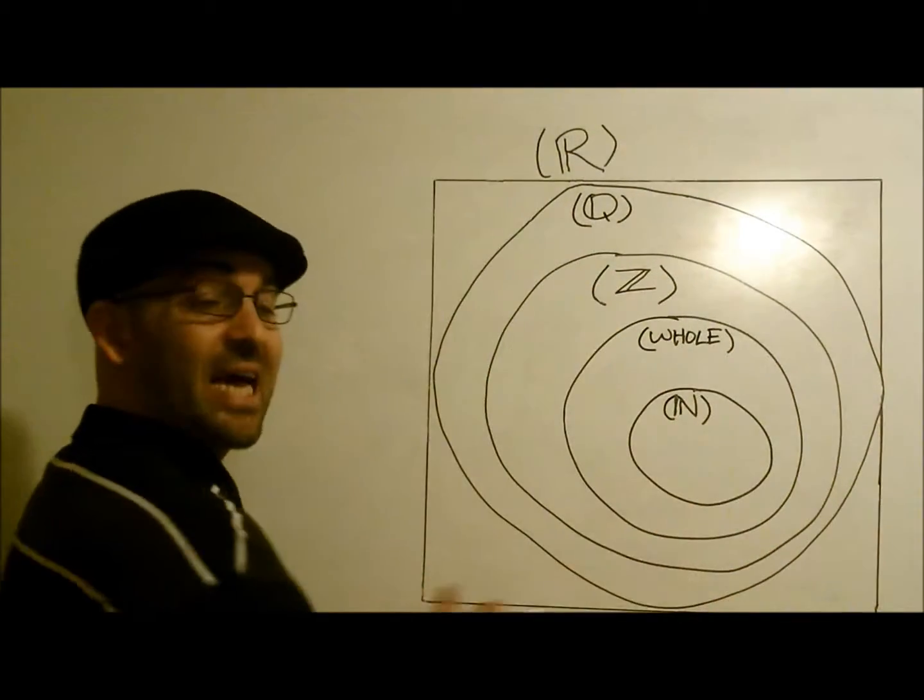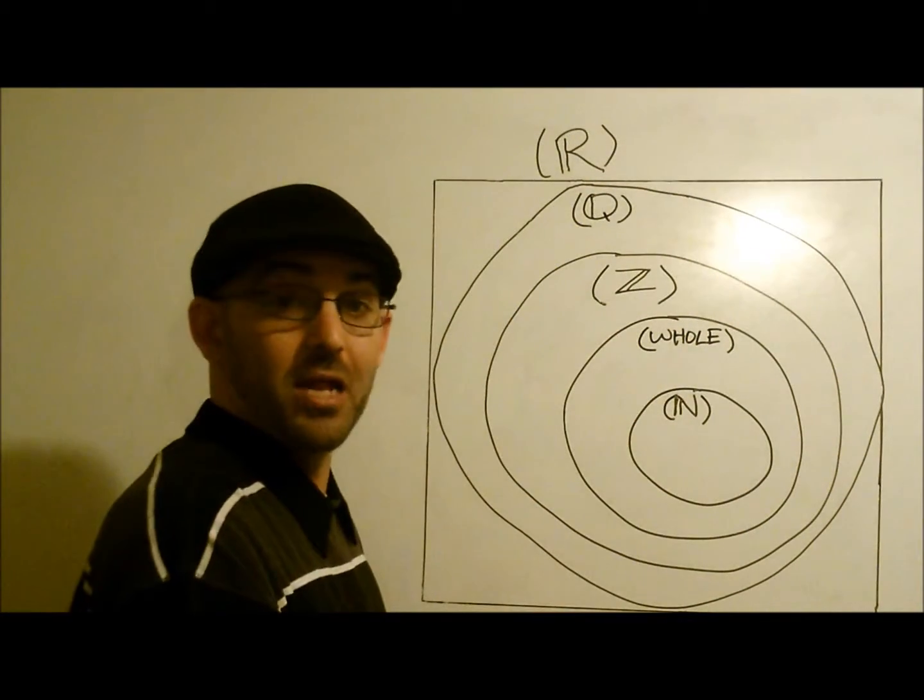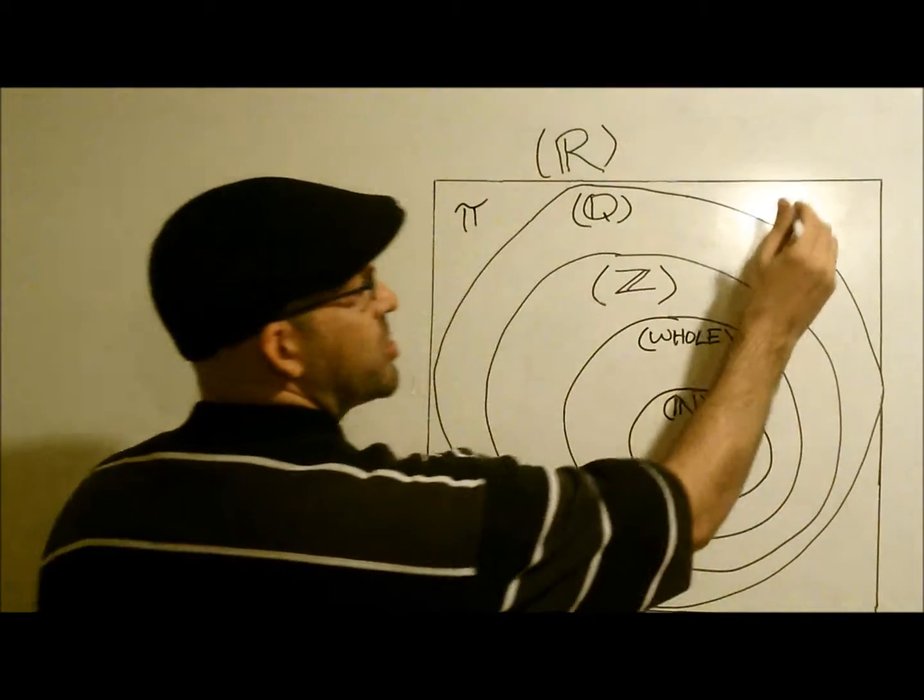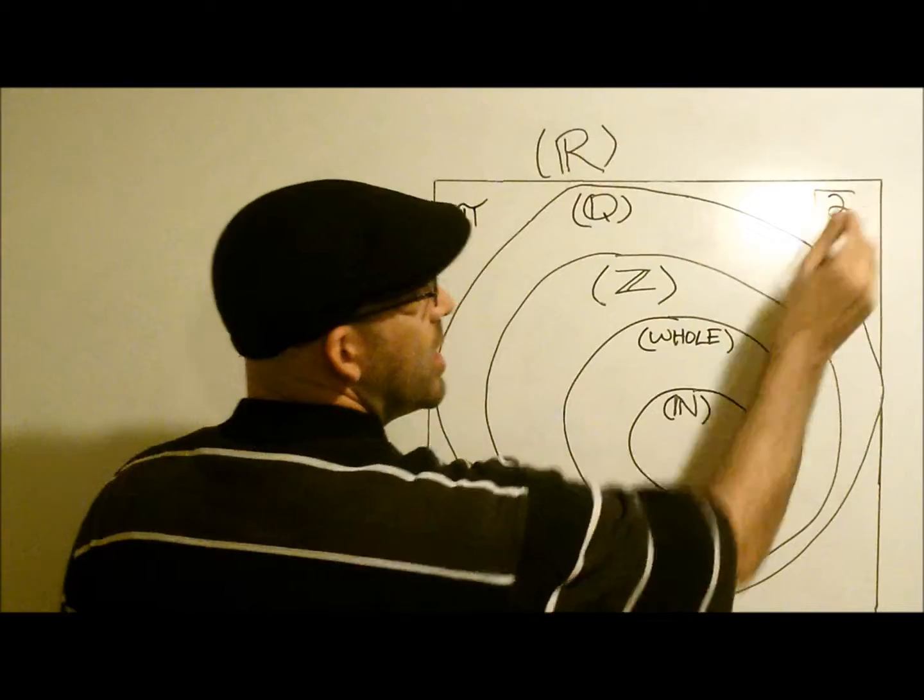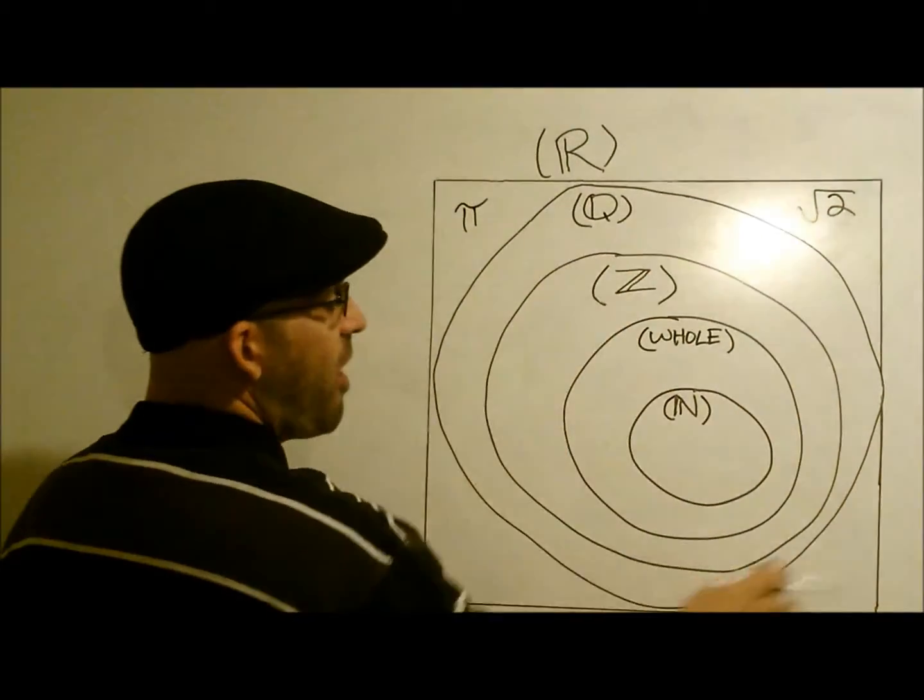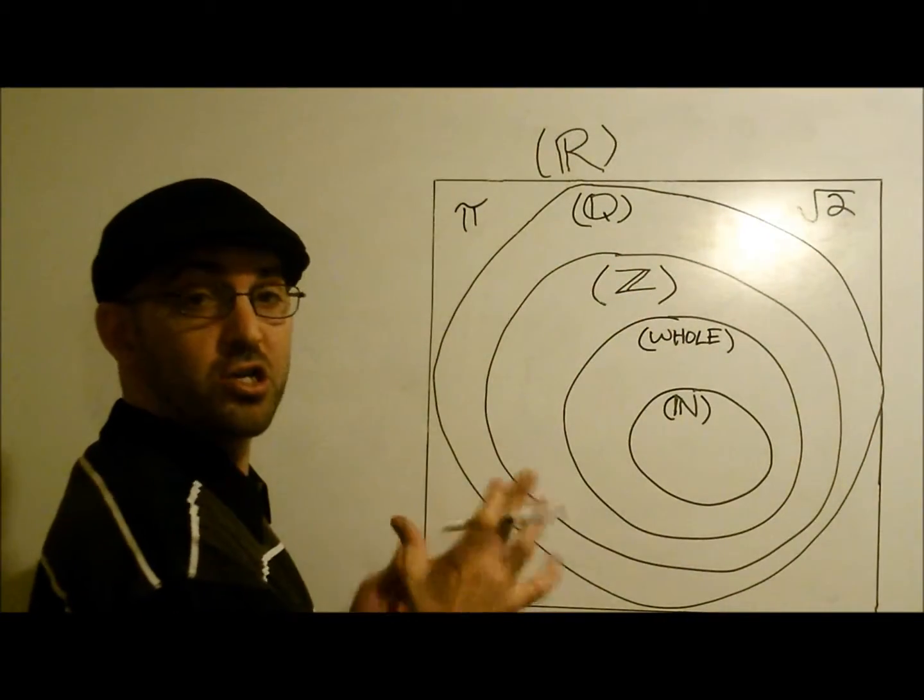Right here inside this box is a category of all numbers that you can find on a number line, such as pi, the square root of 2. Now we know that these are irrational numbers, so they do not fall inside of the rational number circle.